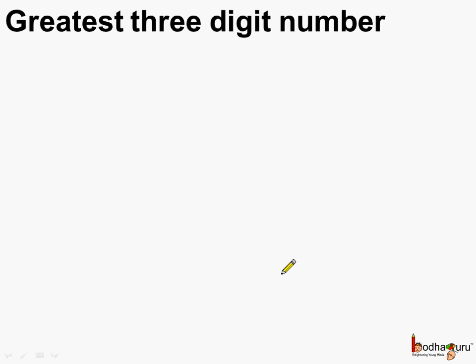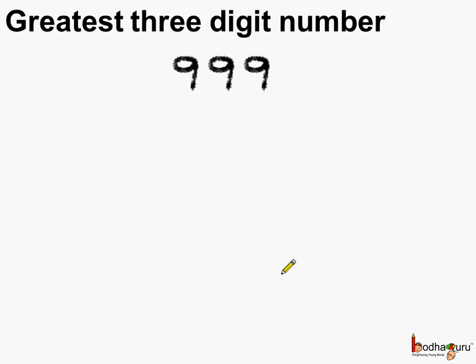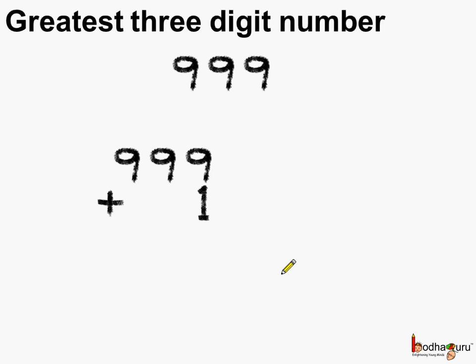Which is the greatest 3-digit number? It has to be 9 written three times — 9, 9, 9. Now again if we add 1 to it, what should we get? We should get the smallest 4-digit number.